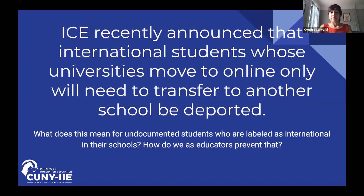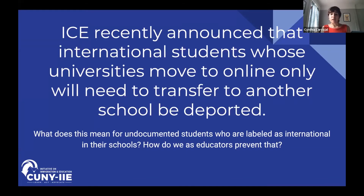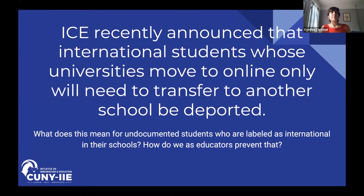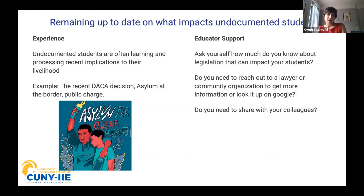This is also important in light of ICE's announcement that international students whose universities move to online-only will need to transfer to another school or face deportation. What does this mean for undocumented students who are being mislabeled as international — even if they shouldn't be — or in states that don't allow in-state tuition and must be labeled as out-of-state or international? How can we as educators prevent our students from being further implicated in the deportation complex by asking these questions before students have to repeatedly ask them themselves?